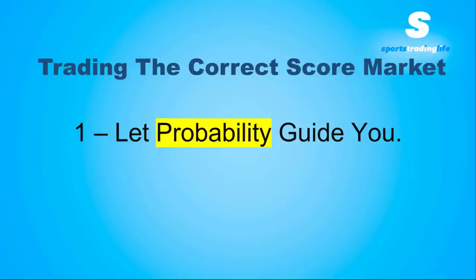We're not trying to reinvent the wheel, we're not trying to be heroes trying to back say 3-0 to the underdog or something like that. You could just cover the most probable score lines. When we say let probability guide you, it could just be a case of looking at the match odds market. If we can see a favorite which is going to win say 70% or 80% of the time, that's already guiding us in the direction of covering score lines where this favorite wins.